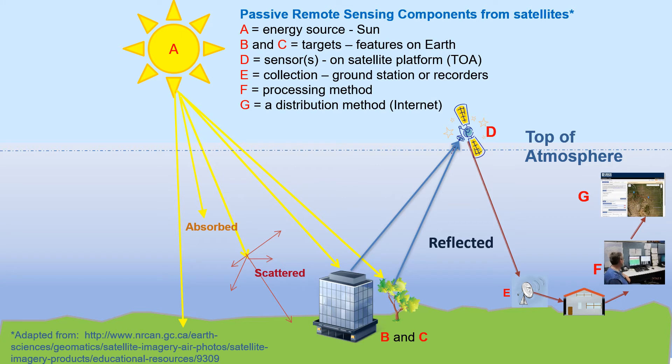This is an example of passive remote sensing using satellites. The Sun's energy reaches targets on the ground — some is absorbed, some scattered, and some reflected. A satellite at the top of the atmosphere collects the reflected energy. If close to a receiving station it transmits immediately; otherwise it records the data and transmits when it next passes over the station. The data then goes to a center where a human does some collecting and correcting before it's produced and made available over the internet.